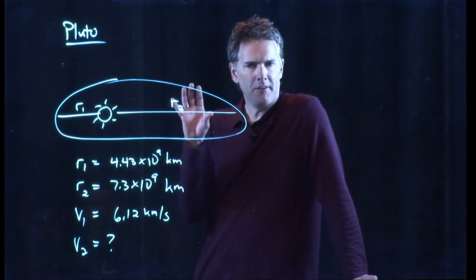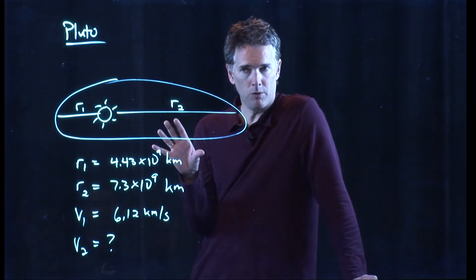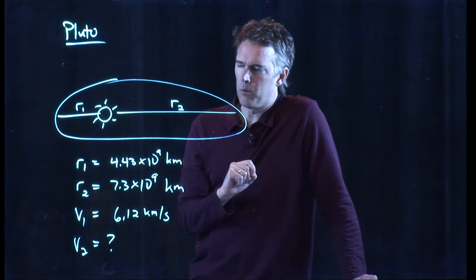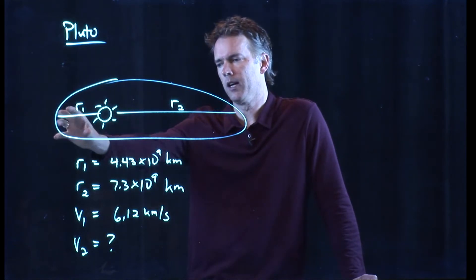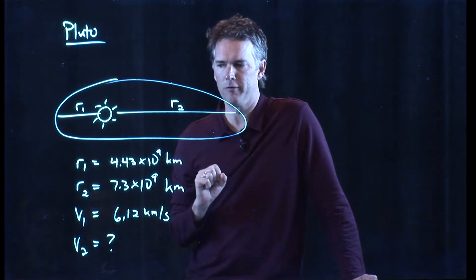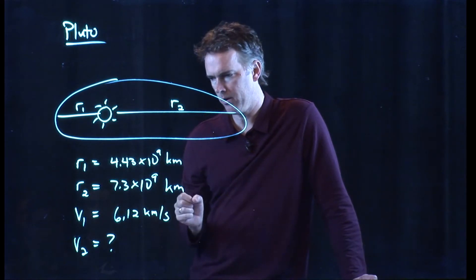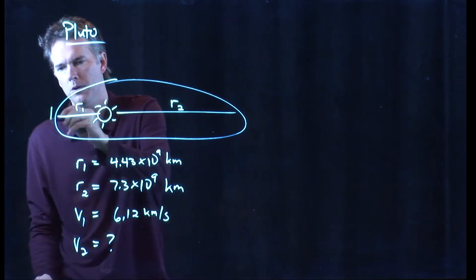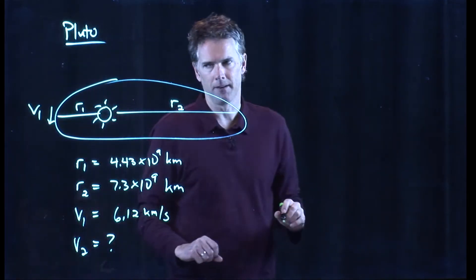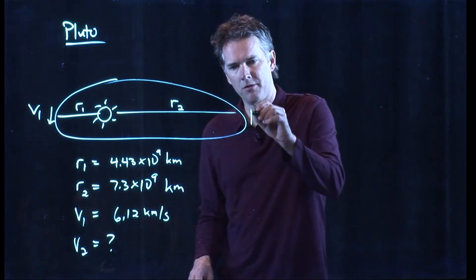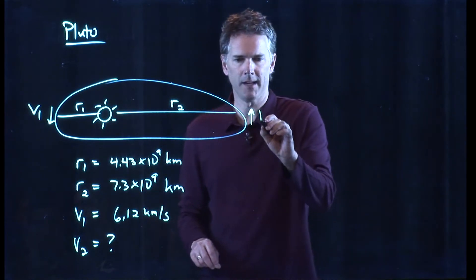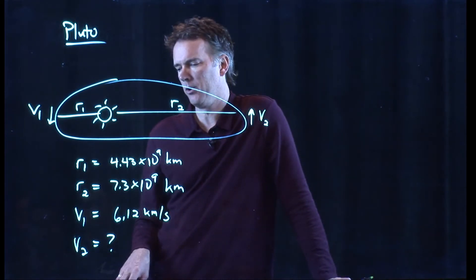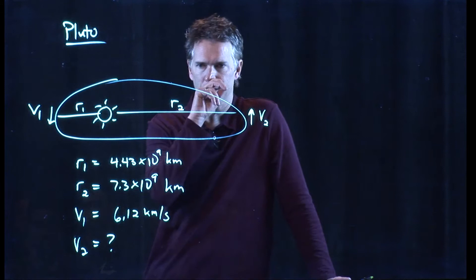Hello class, Professor Anderson here. Let's take a look at Pluto's orbit. Pluto has this very elliptical orbit and what we know is that at closest approach it has a distance of 4.43 times 10 to the 9 kilometers and it's moving at a speed of 6.12 kilometers per second. When it gets out to its farthest point it is moving at some speed V2. We know that distance. It's 7.3 times 10 to the 9 kilometers and we need to figure out what V2 is.